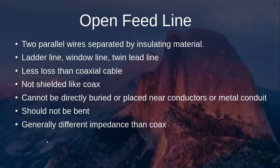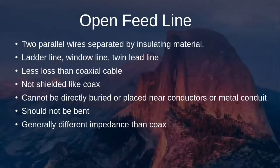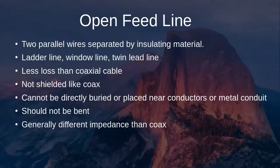Open feed line consists of two parallel wires separated by insulating material. Ladder line, window line, and twin lead are the main types — the most common in amateur radio use is window line. It has much less loss than coaxial cable, but is not shielded and can be more finicky to use. It cannot be directly buried or placed near conductors or metal conduits. It should not be bent sharply or it could break. Its impedance ranges from 300 to 600 ohms, compared to coax at around 50 ohms.